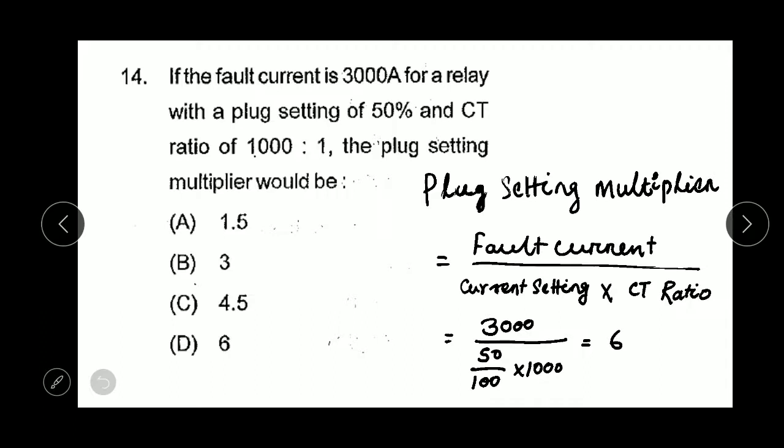Question number 14: If the fault current is 3000 ampere for a relay with a plug setting of 50% and CT ratio of 1000 to 1, the plug setting multiplier would be? The formula is fault current by current setting times CT ratio. We calculate 3000 divided by 50% times 1000, which equals 6. Option D is correct.